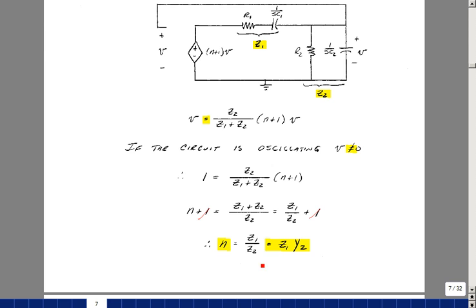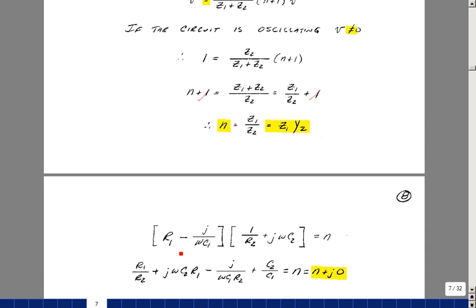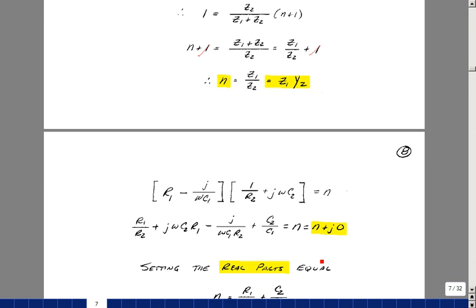This is going to give us again a gain and a frequency. Because two things are in parallel here, let me write Z2 as the reciprocal of Y2. So Z1 is a series combination of R1 and C1, and Y2 is the parallel combination of R2 and C2. So it's the sum of their admittances. Again, that has to equal N. If I multiply this out, I'll get a real and imaginary term. So I get this times this, which is R1 over R2. Actually, I'm going to do this one over here first, of J omega C2 R1. And I've got this inner product, which is minus J omega C1, and then one over R2. And then lastly, the product of these two gives me C2 over C1.